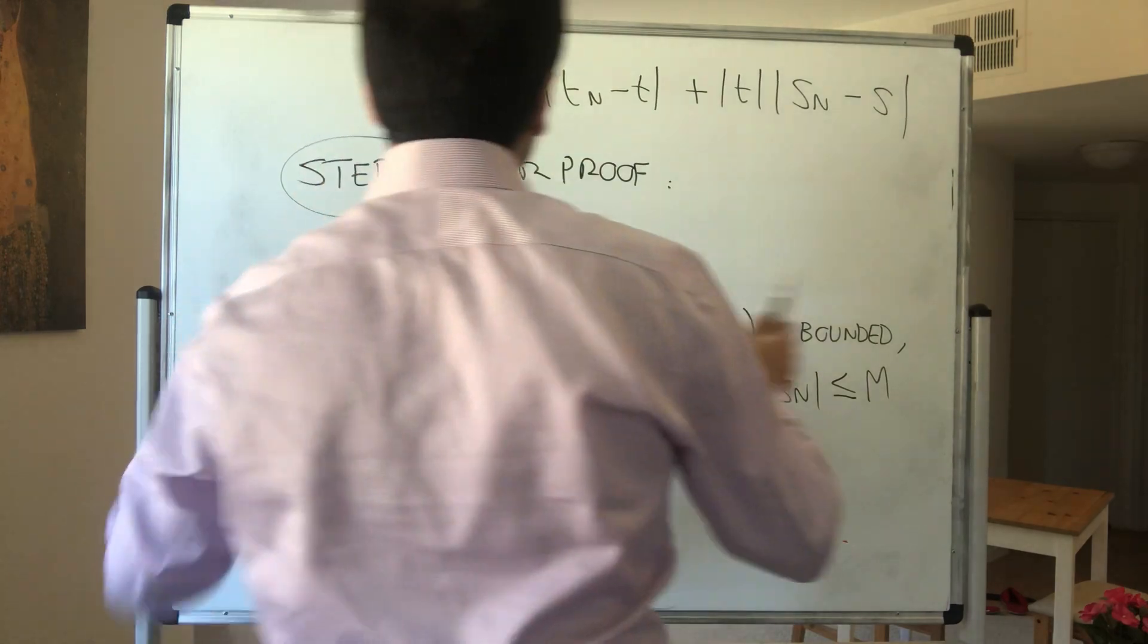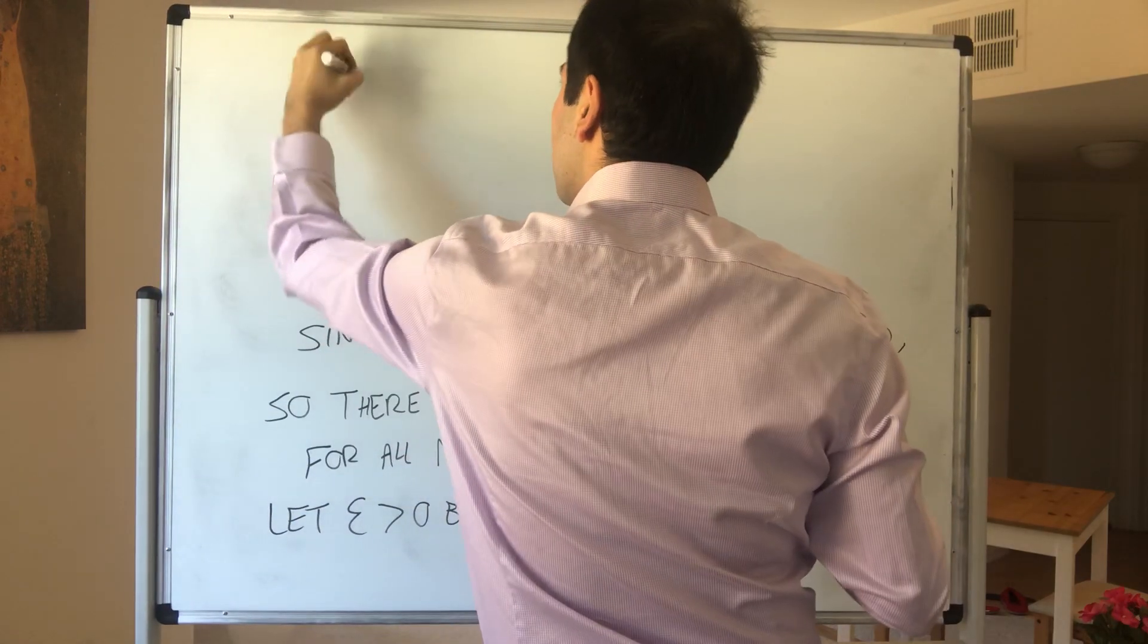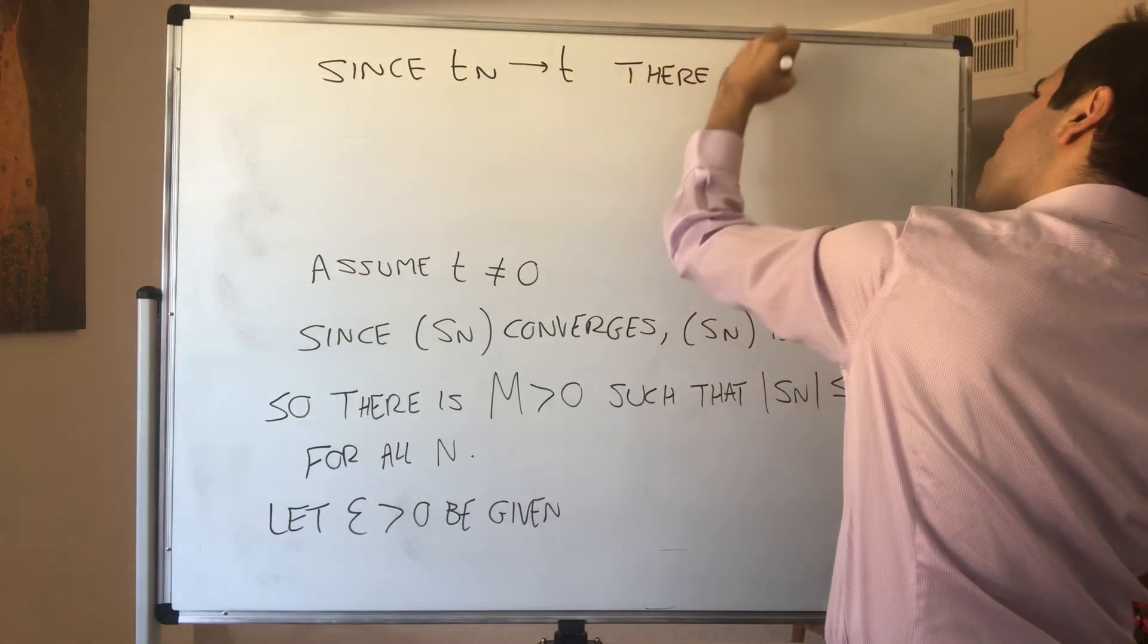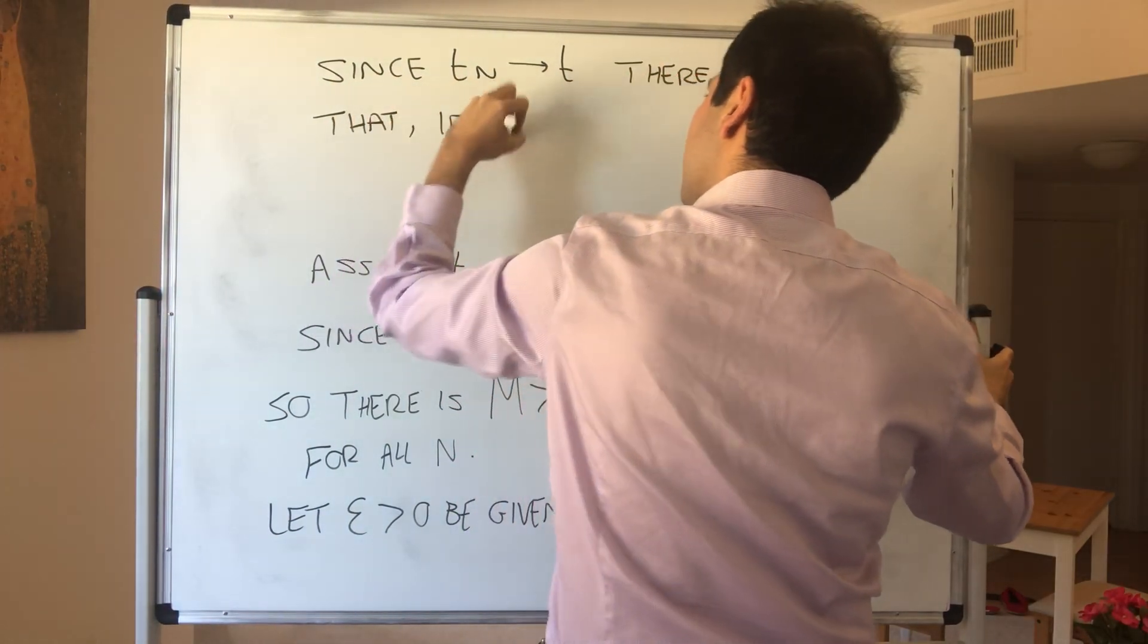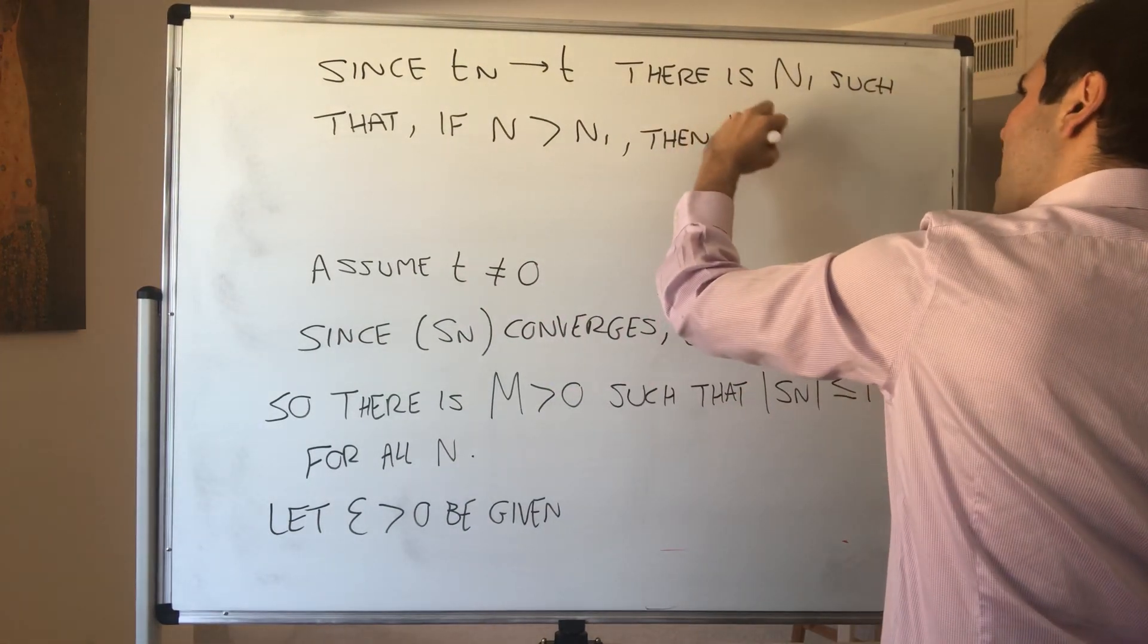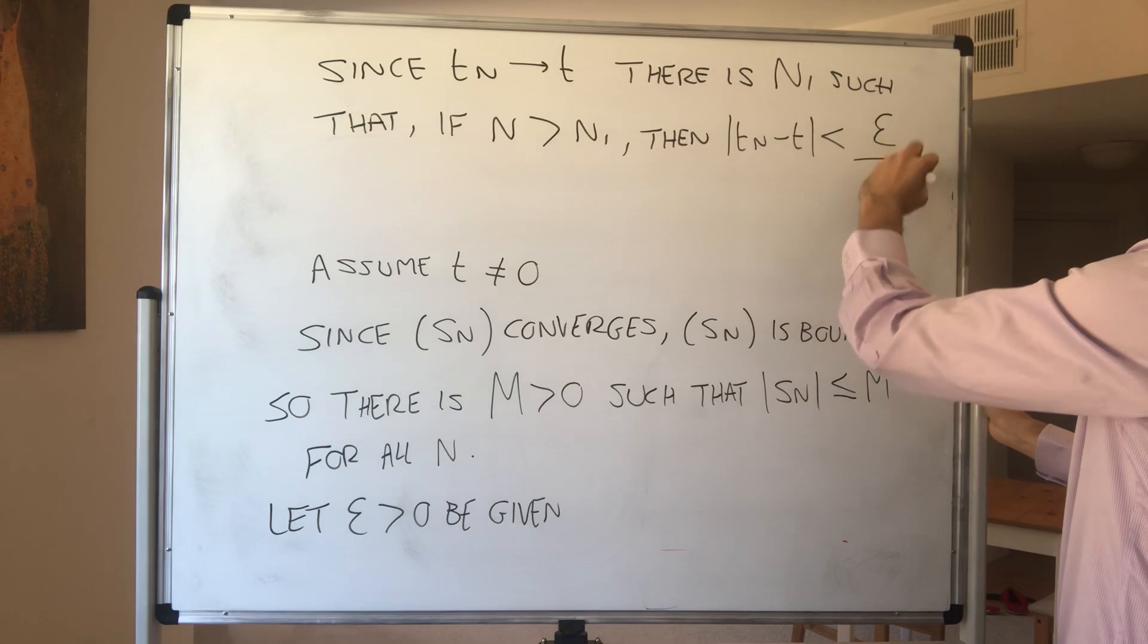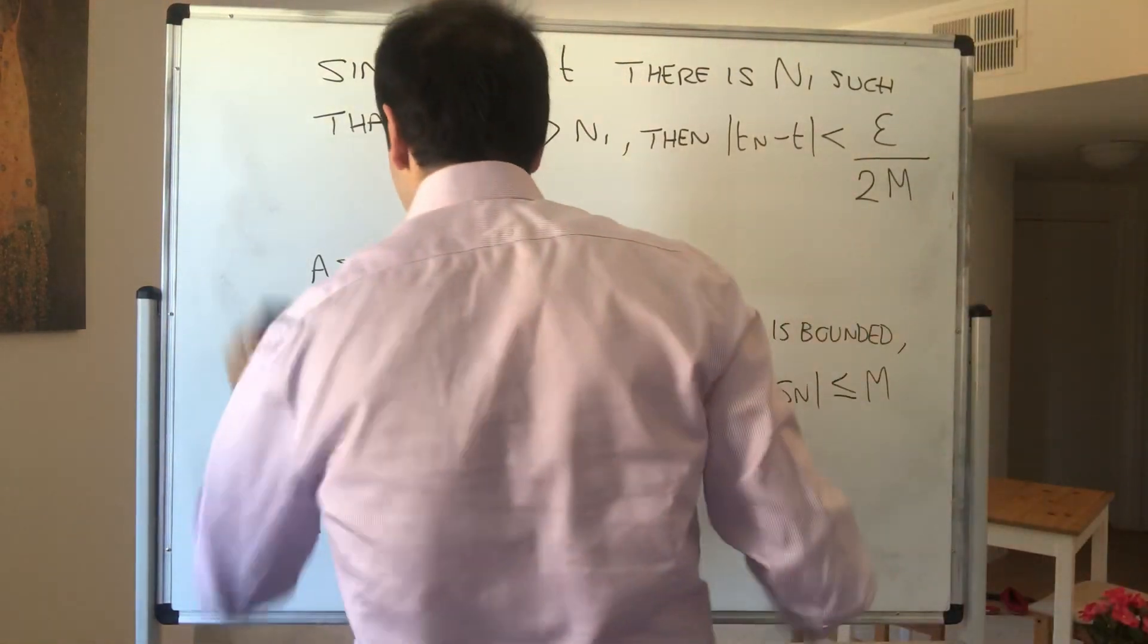So, and then since Tn goes to T, we know that there is N1 such that if N is bigger than N1, then Tn minus T is less than not only epsilon, but we need this M to cancel out the Sn term. And we also need a 2 because we have two terms. So we know this is true.